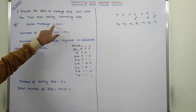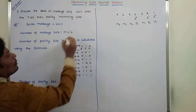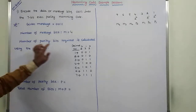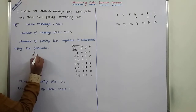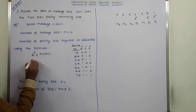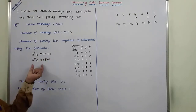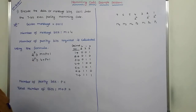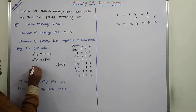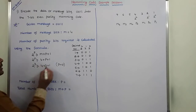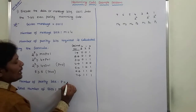The given message is equal to 0011. How many bits are there? 1, 2, 3, 4. Therefore, number of message bits M is equal to 4. Next, the number of parity bits required is calculated using the formula: 2 power P greater than or equal to M plus P plus 1. Here, 2 power P greater than or equal to 4 plus P plus 1. Suppose P is equal to 3: 2 power 3 greater than or equal to 4 plus 3 plus 1, that is 8 greater than or equal to 8. That is true. So the number of parity bits P is equal to 3.